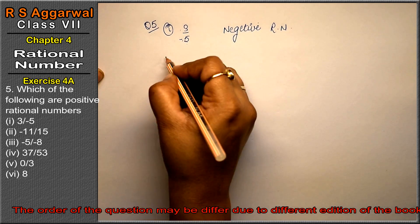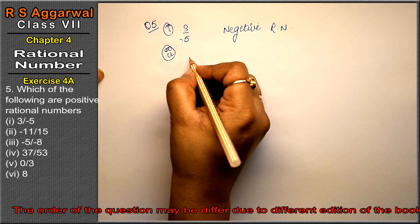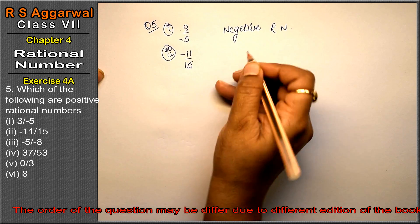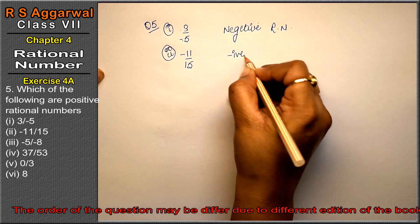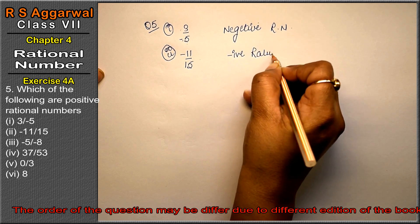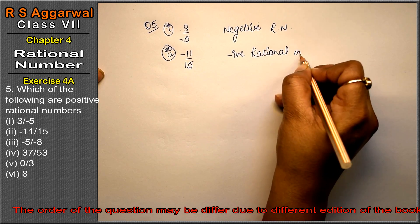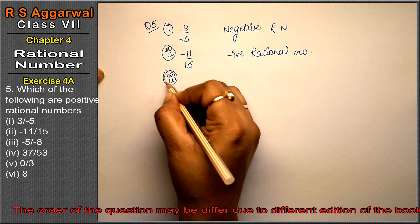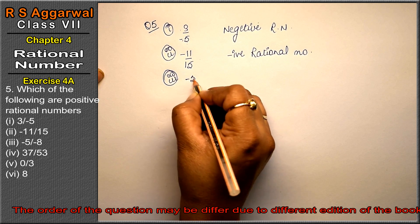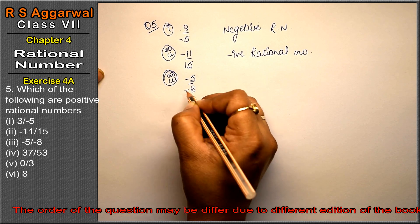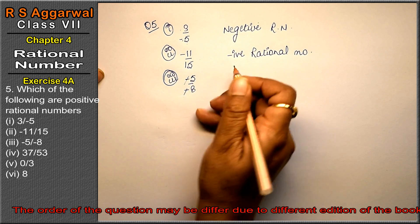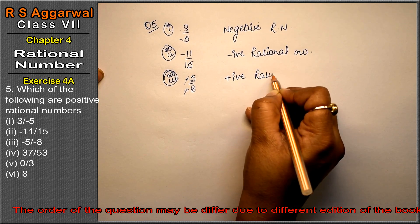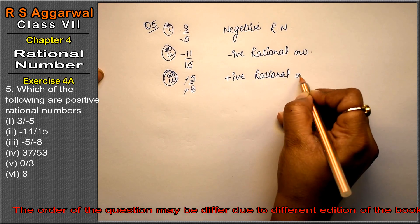Second part is minus 11 upon 15 — this is also a negative rational number. Third part is minus 5 upon minus 8. Here, minus and minus cancel out, so it becomes positive — it is a positive rational number.